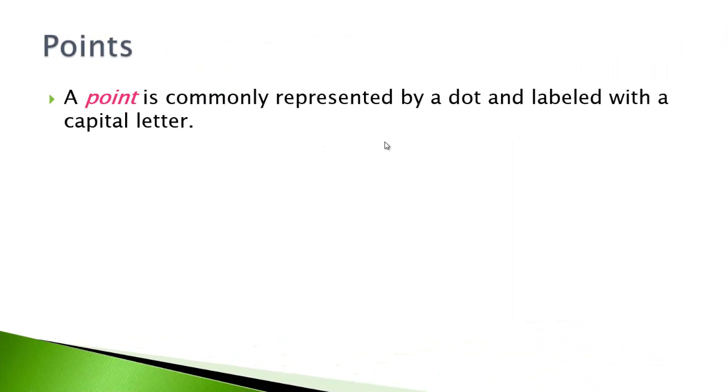Points. A point is commonly represented by a dot and labeled with a capital letter. So these are all points. If I were to ask you to label it, you would just put the single letter, or you could precede it with the word point. That would be point A, you could call this point B. You've got to have that point in the diagram for you to identify it as a point.